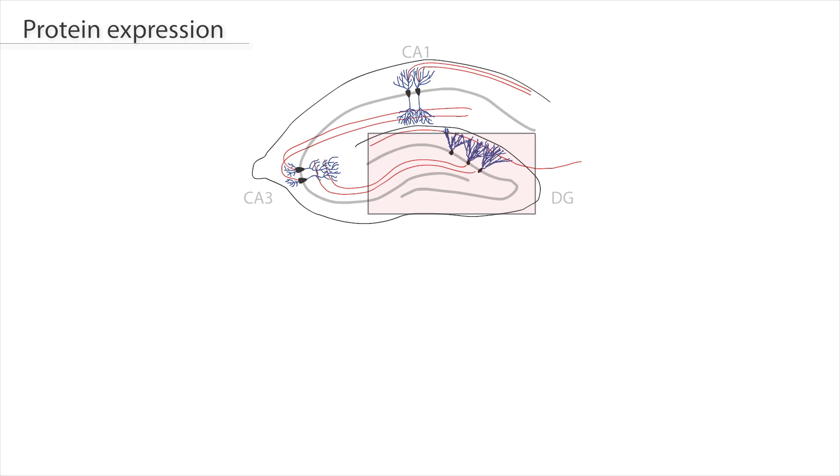Work from the last decade has shown that these tetrameric receptors bind to auxiliary subunits that modify receptor functions in the dentate gyrus.